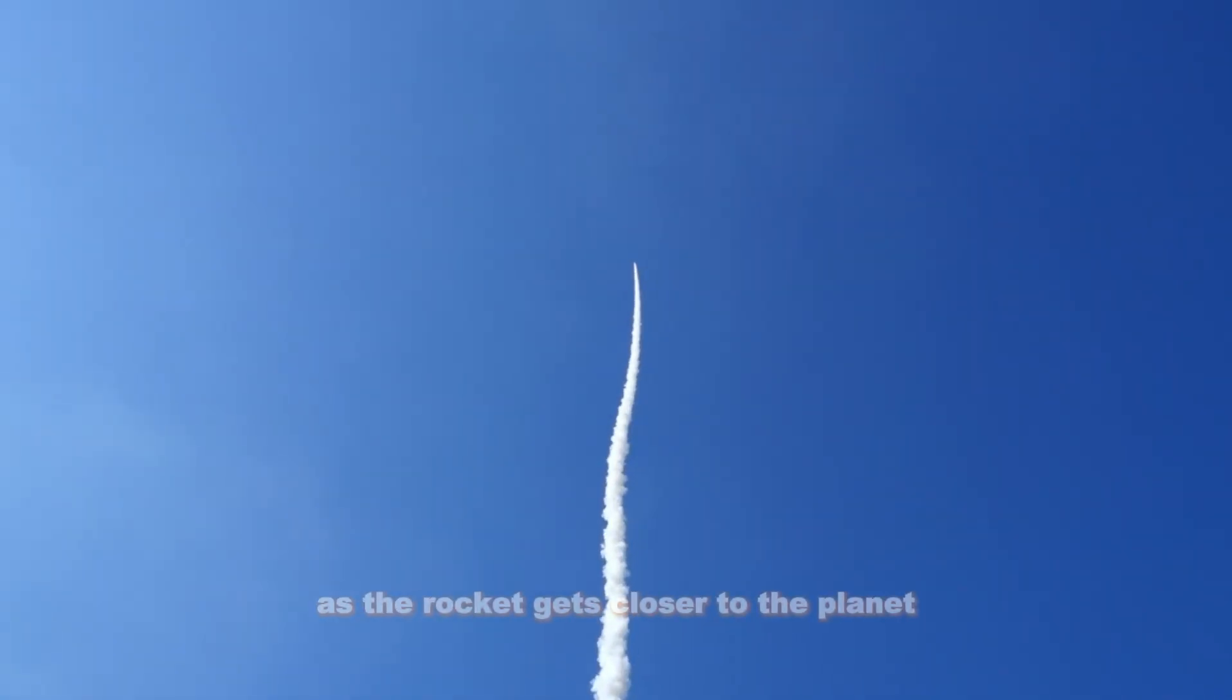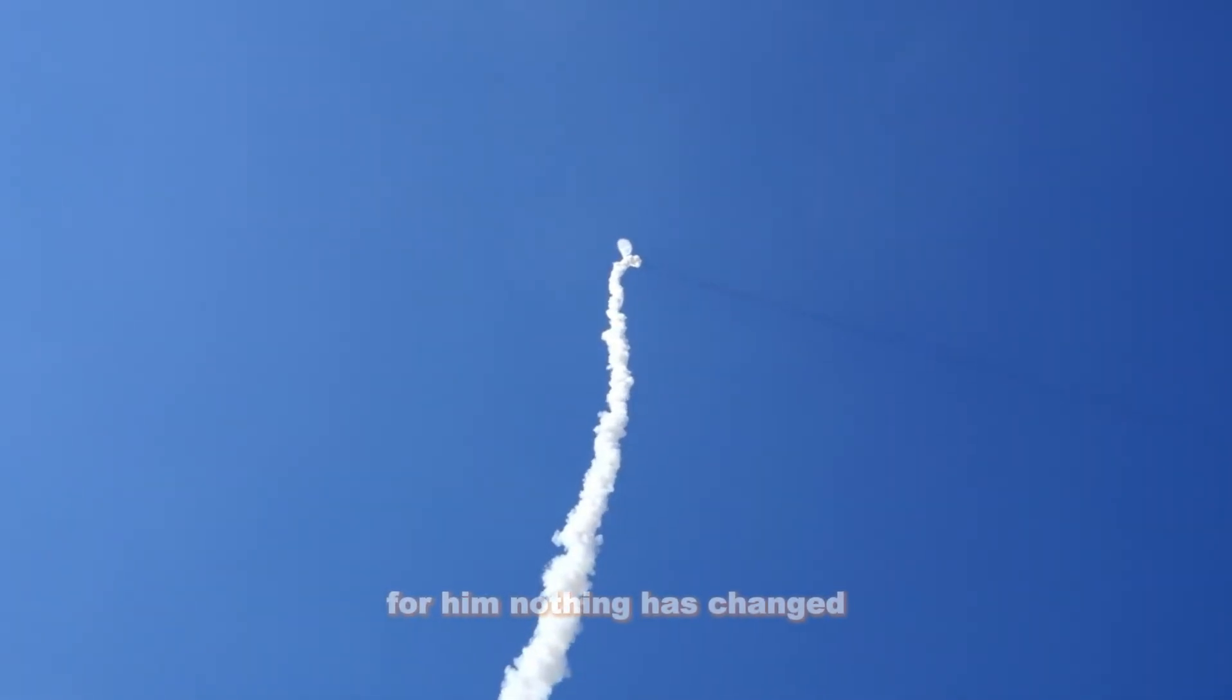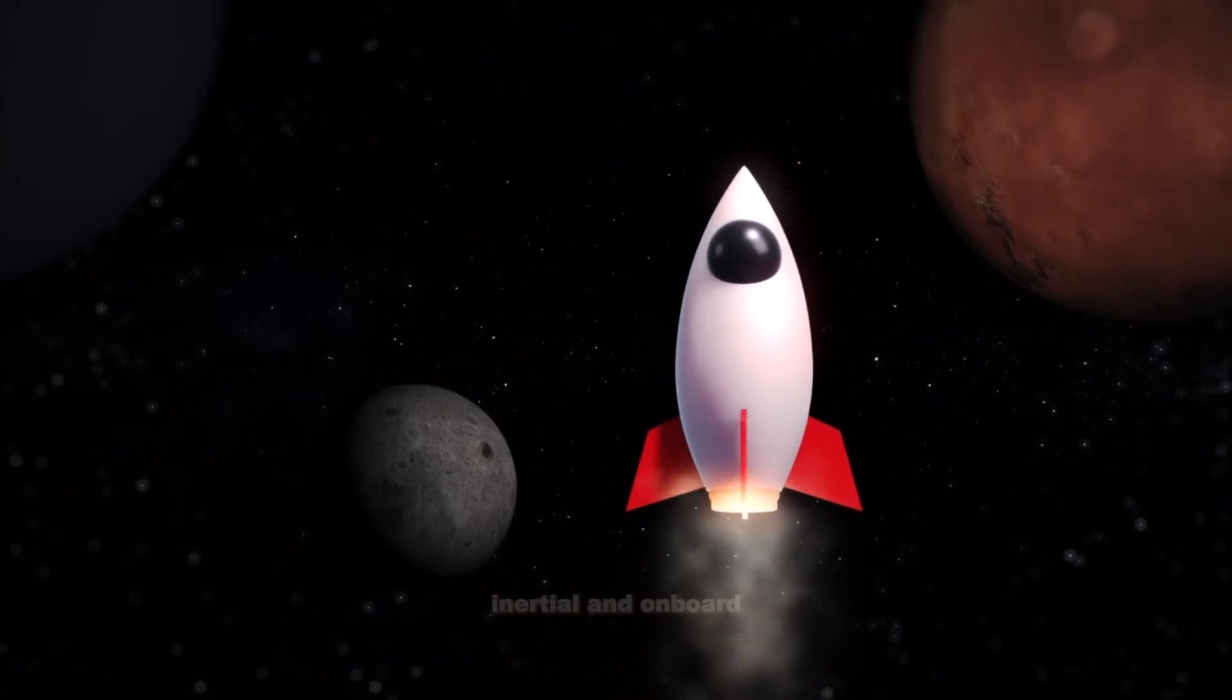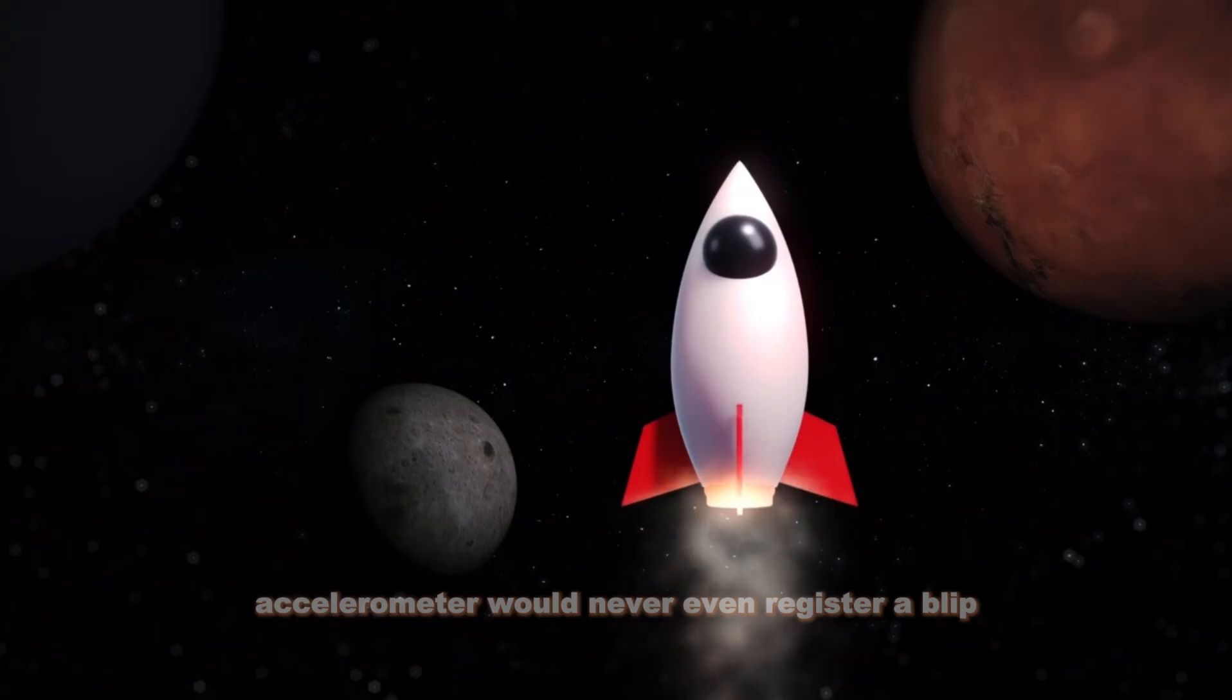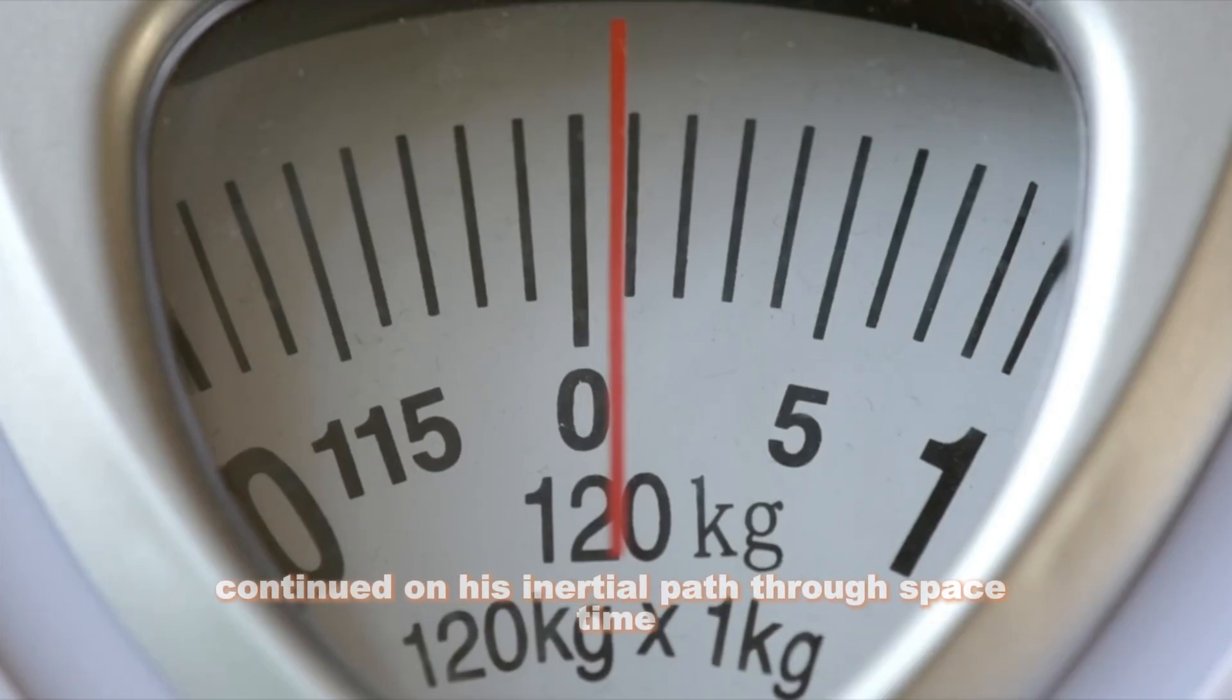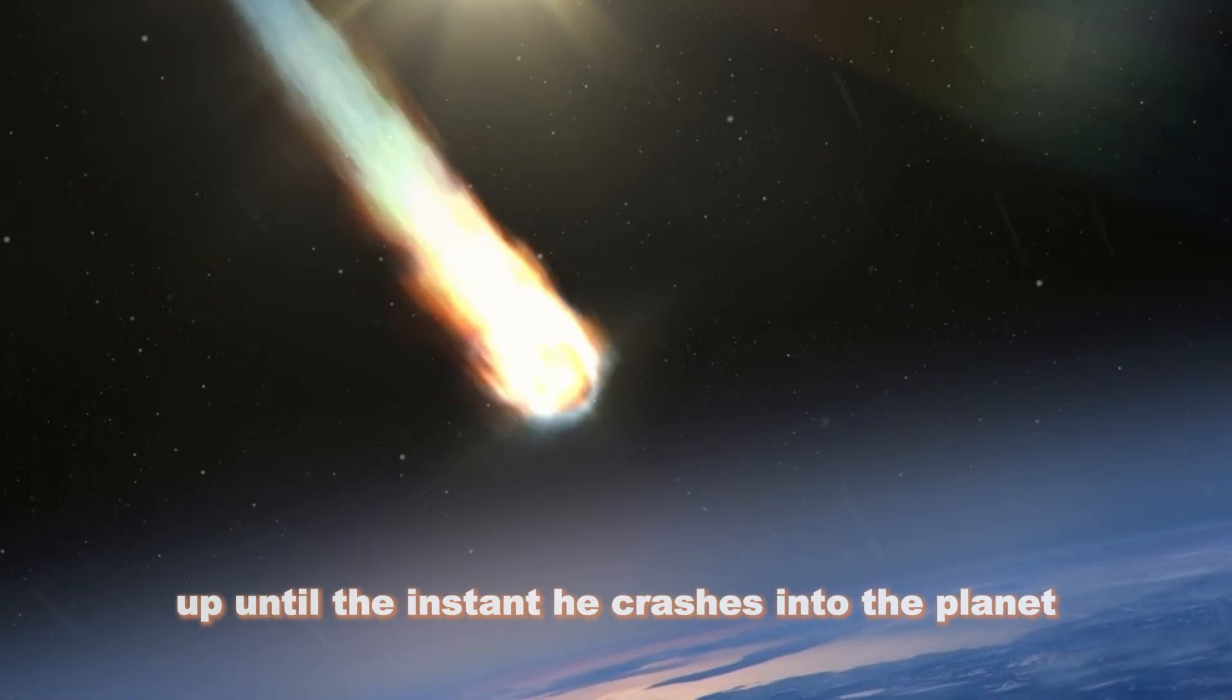As the rocket gets closer to the planet, it goes faster and faster, but Rocketman still feels weightless. For him, nothing has changed. So where on this journey would you say the frame of reference changes from inertial to non-inertial? An onboard accelerometer would never even register a blip. He has continued on his inertial path through spacetime. So the logical conclusion is his frame of reference is inertial up until the instant he crashes into the planet.